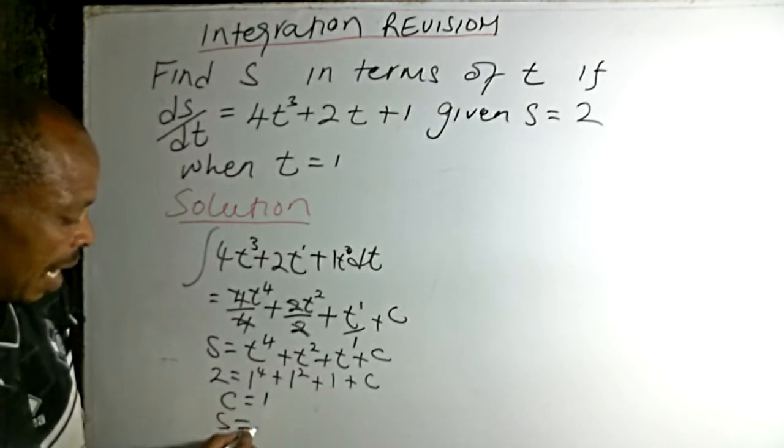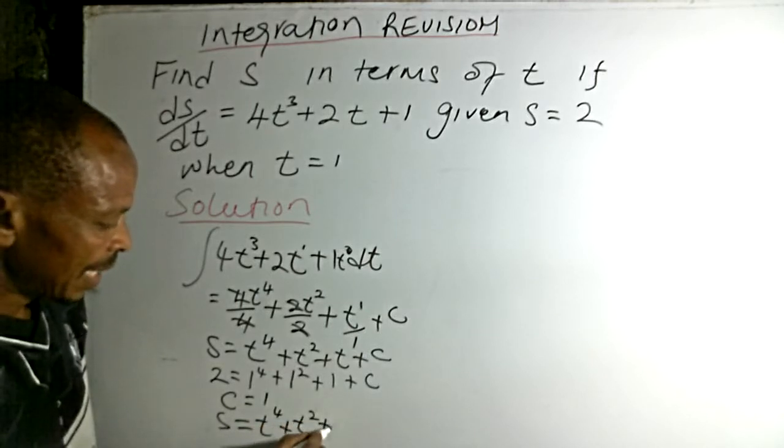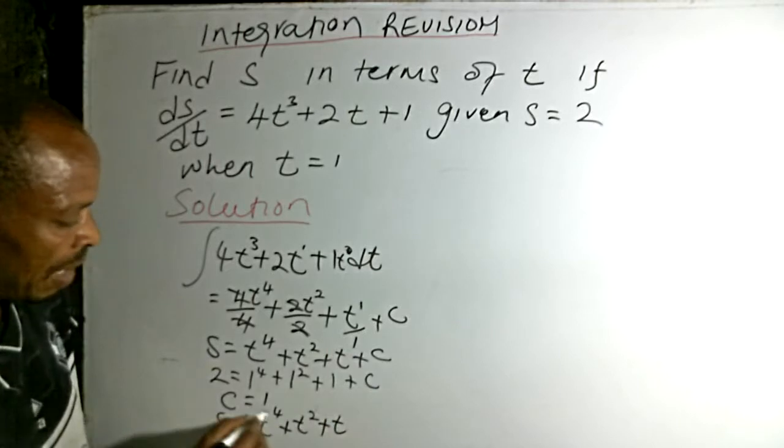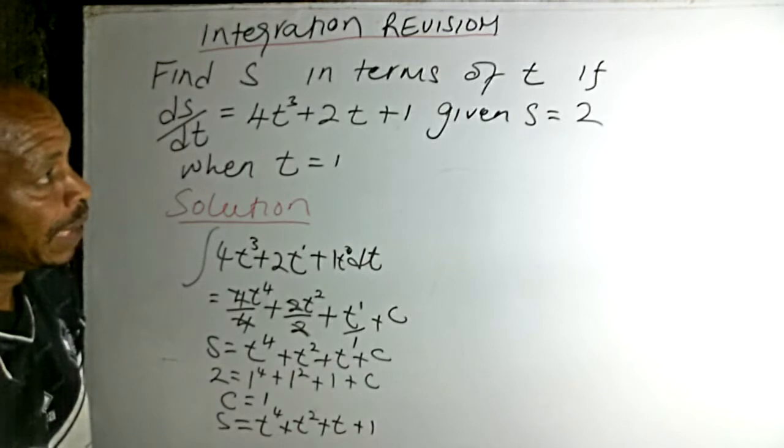Therefore our expression of s equals... now we have t to power 4 plus t² plus t, and we have found our c is -1. So that is s in terms of t.